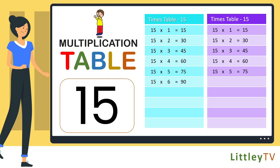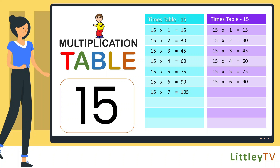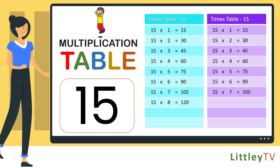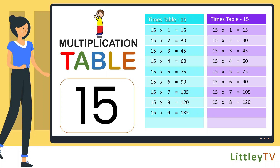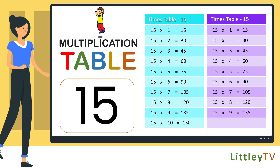15 sixes are 90, 15 sevens are 105, 15 eights are 120, 15 nines are 135, 15 tens are 150.